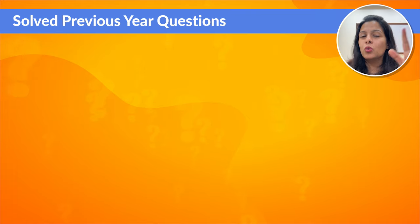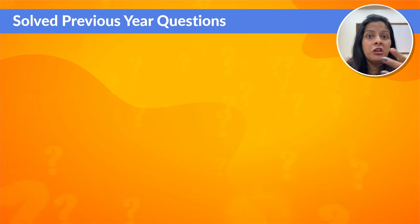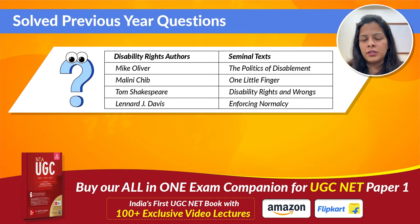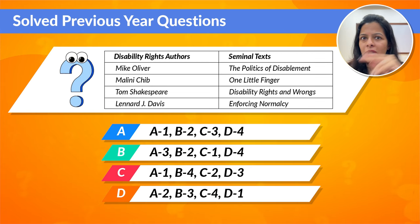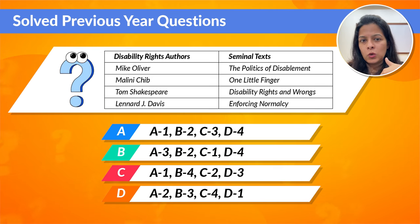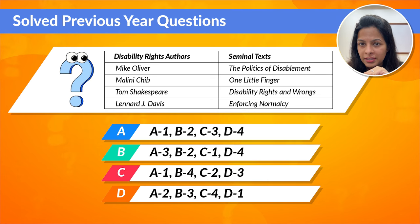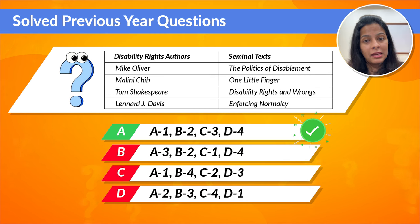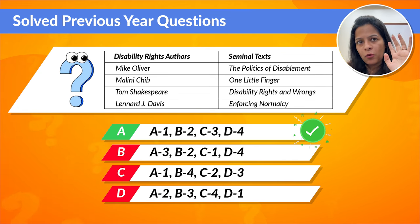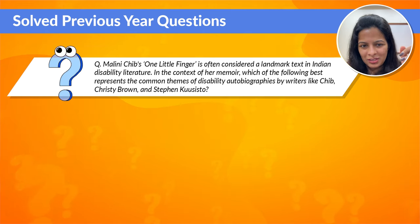Now let's quickly look at some previous year questions so you can understand what type of preparation is needed for disability literature. The first question asks you to match the author with the text. As discussed, Mike Oliver is the author of 'Politics of Disablement,' and 'One Little Finger' is the autobiography of Malini Chep. Based on this logic, option one is correct. Remember the names of these works because these are very common types of questions in the exam.